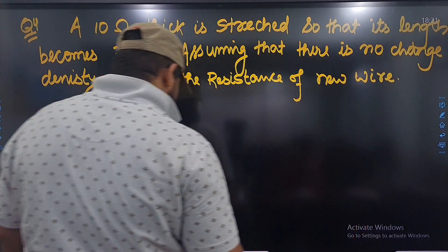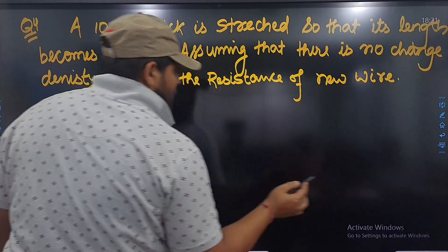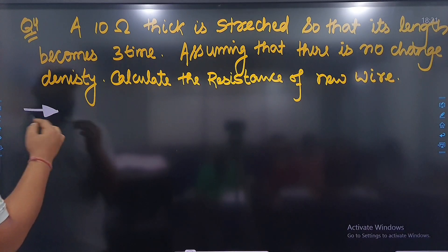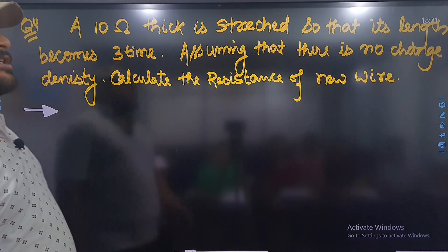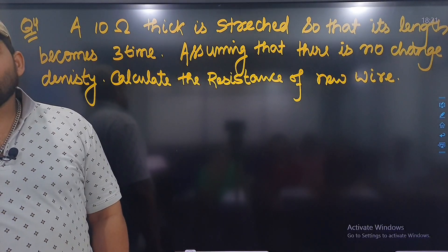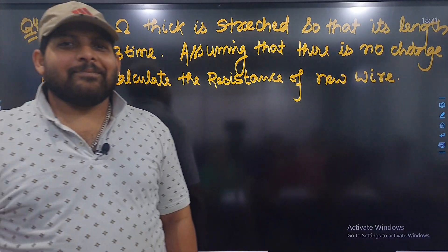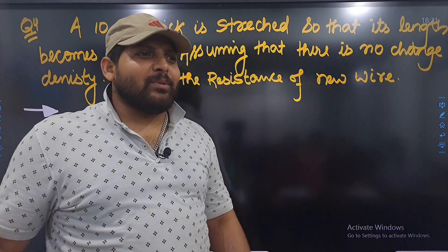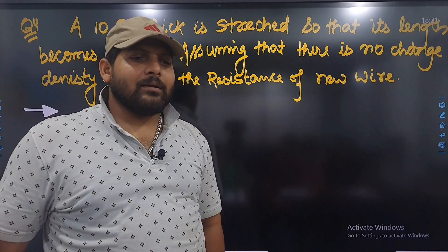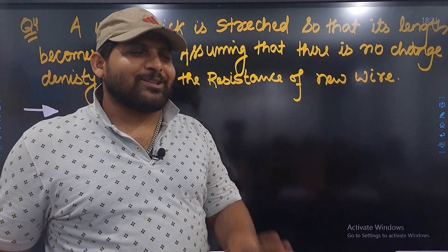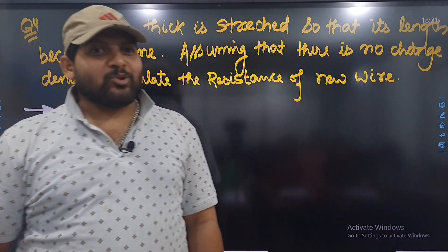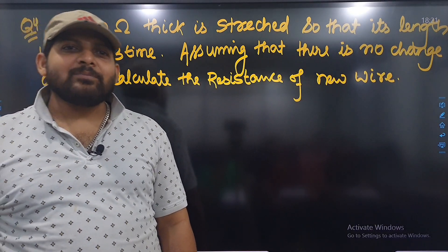यह बहुत सरल बेसिक सवाल है। Student guesses: 9 times हो जाएगा। Teacher asks: 9 times कैसे हो जाएगा?